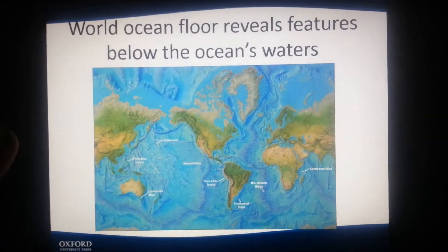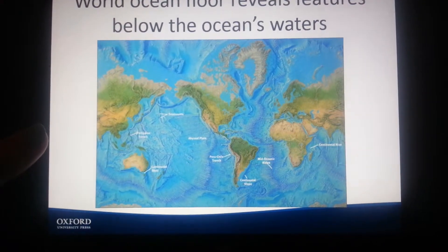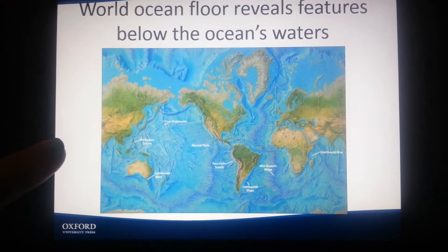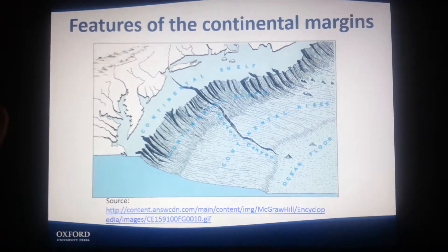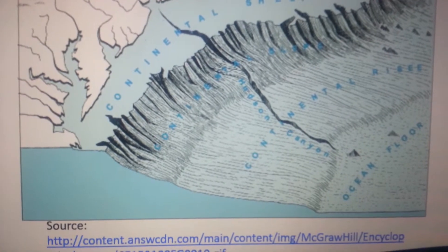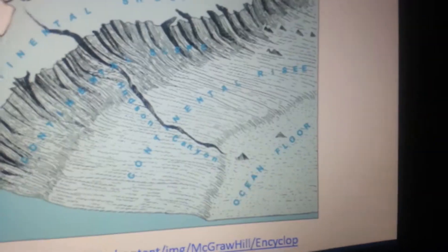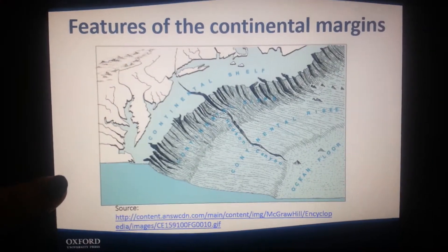The world ocean floor reveals features below the ocean waters. You have Abyssal Plains, Continental Shelf, Continental Slope, Mid-Oceanic Ridge, and Continental Rise, among other features. Then for features of Continental Margins, you have the Continental Shelf going into the Continental Slope, then into the Continental Rise and the ocean floor, also called the Abyssal Ridge. There's also a canyon feature shown. And that's it.